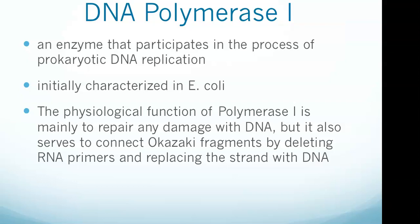The E. coli form of the enzyme is composed of 928 amino acids and is an example of a processive enzyme. It can sequentially catalyze multiple polymerizations without releasing the single-stranded template. The physiological function of polymerase 1 is mainly to repair any damage within DNA, but it also serves to connect Okazaki fragments by deleting RNA primers and replacing the strand with DNA. DNA polymerase 1 removes the RNA nucleotides from the primer and adds equivalent DNA nucleotides to the 3' end of Okazaki fragments.